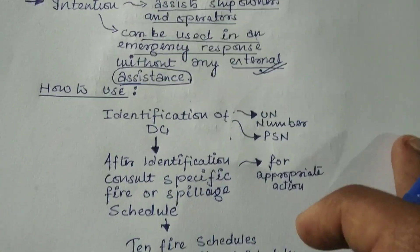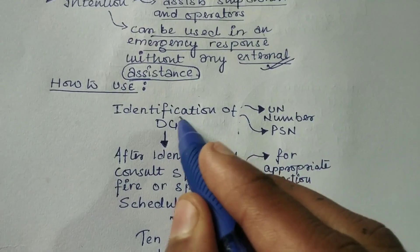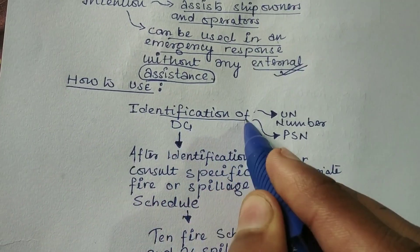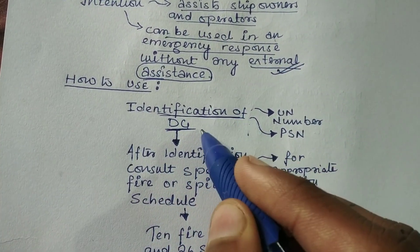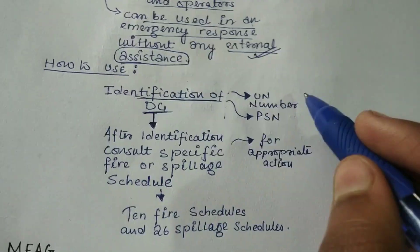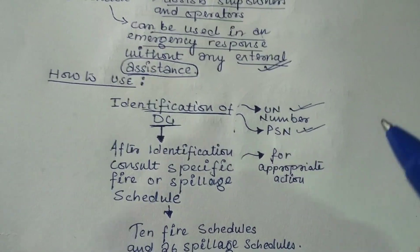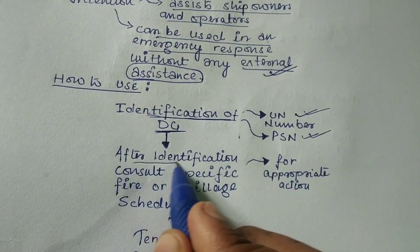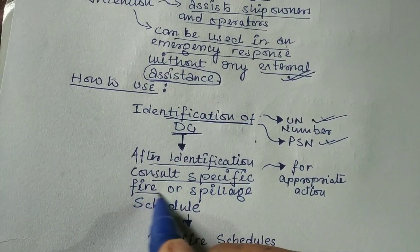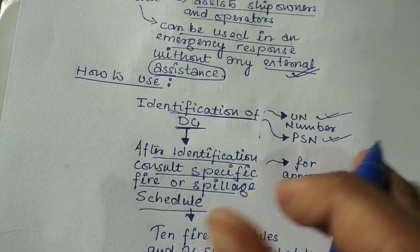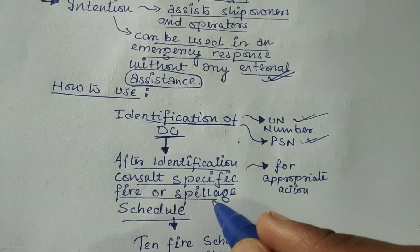So how to use this EMS? First, you need to identify the dangerous good — what type of dangerous good it is. You can identify it by looking at the UN number and PSN. After identification, you consult the specific fire and spillage schedule. This EMS contains specific fire and spillage schedules.